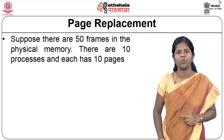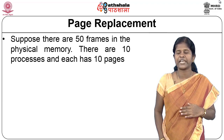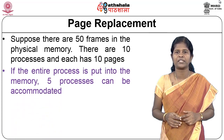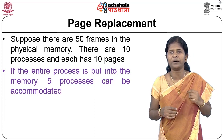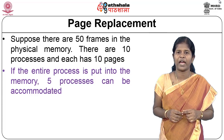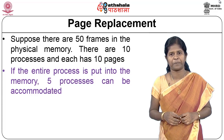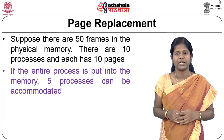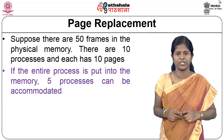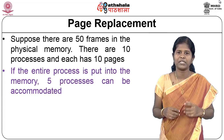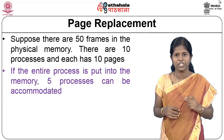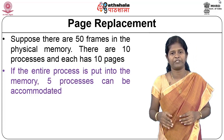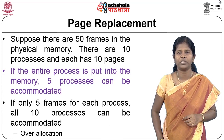Consider an example where you have 50 frames in the physical memory. There are 10 processes, each with 10 pages. To bring all processes into physical memory you would need 100 physical frames. But since all 10 pages may not be active at a particular time for each process, if you give each process only 5 pages, then all 10 processes together need only 50 pages and can all be accommodated in the physical memory.